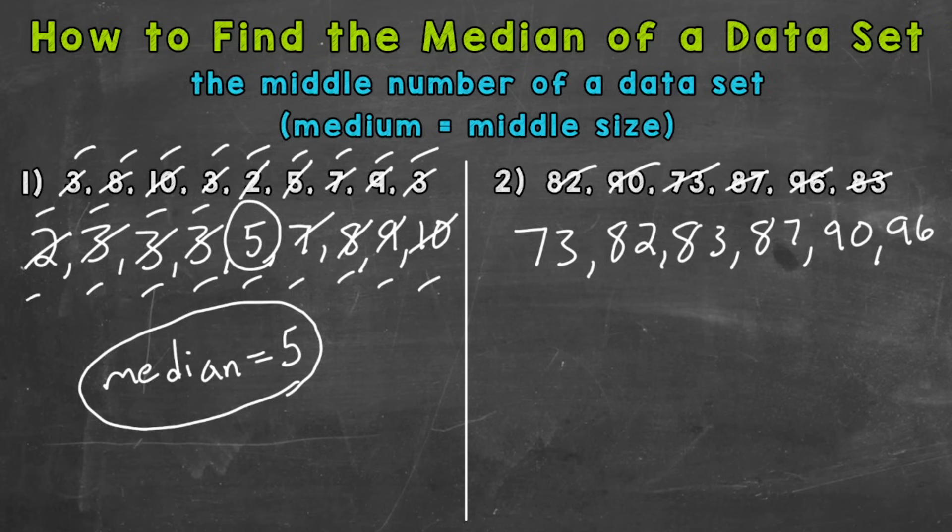So here we have six terms, six numbers in our data set. One, two, three, four, five, six. One, two, three, four, five, six. So we match. We're good to go. And we are in order from least to greatest. So let's find the middle number.